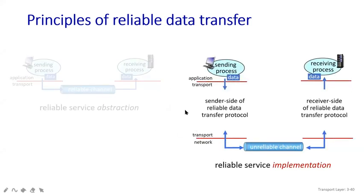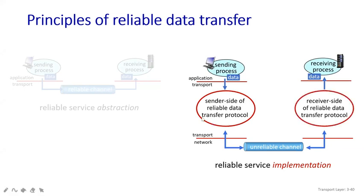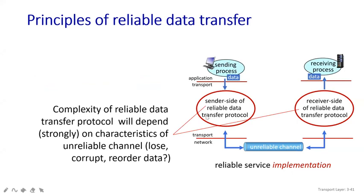Moving towards your implementation path, you can see the reliable service implementation. The channel can be reliable or unreliable. When you send your package to the channel, it will move to the server side — from network layer to transport layer, receiving all the data, then moving from transport layer to application layer. So on the sender side the data is reliable, and in the receiver side also the data will be reliable. The implementation path may involve an unreliable channel, unlike the abstraction which has a reliable channel.